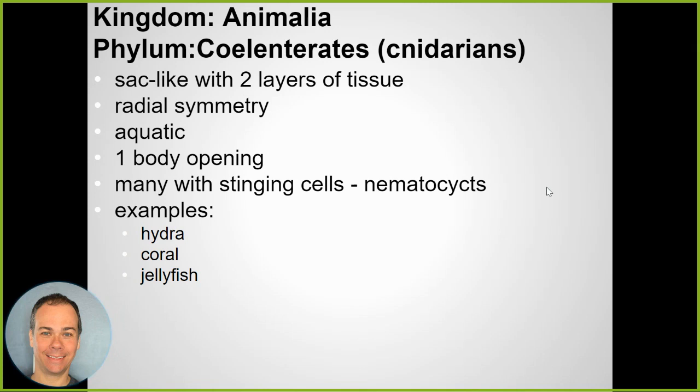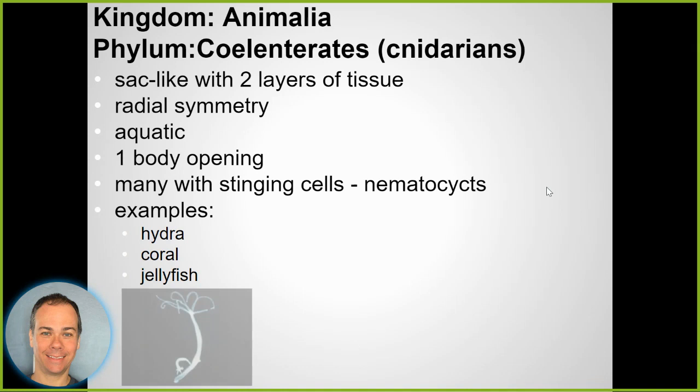Cnidarians are animals with radial symmetry - a circular pattern. They typically live in water and have stinging cells. Things like jellyfish, hydra, and coral are animals - they're cnidarians.